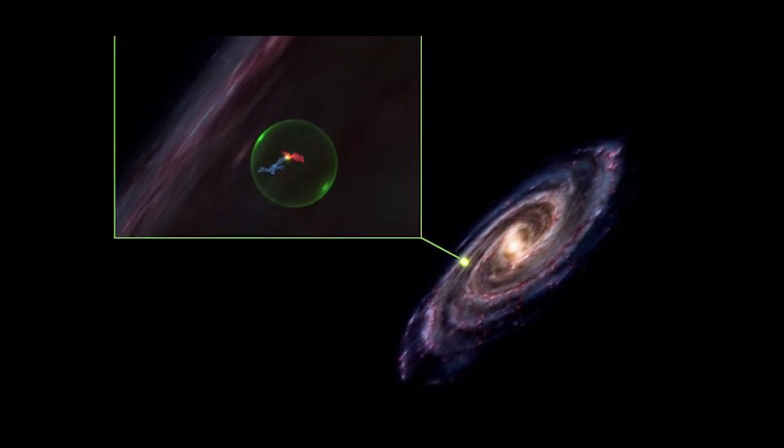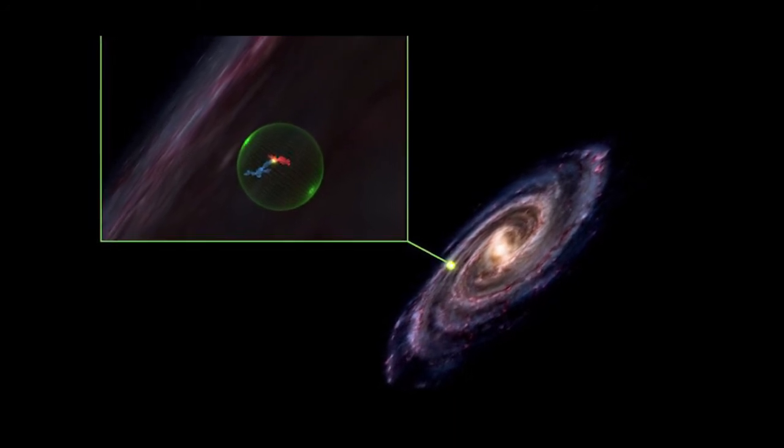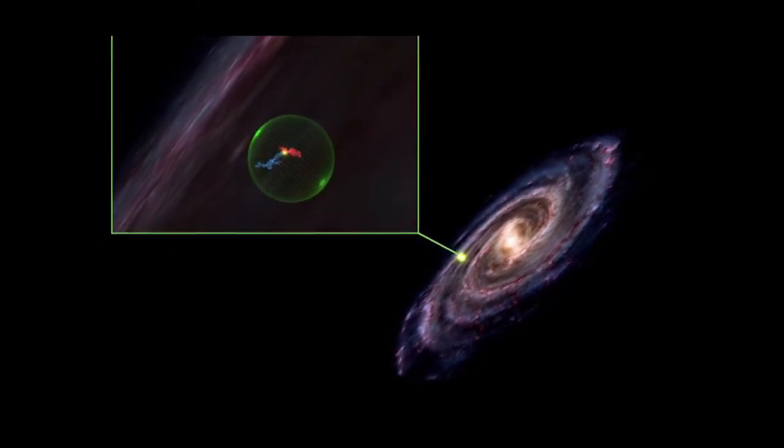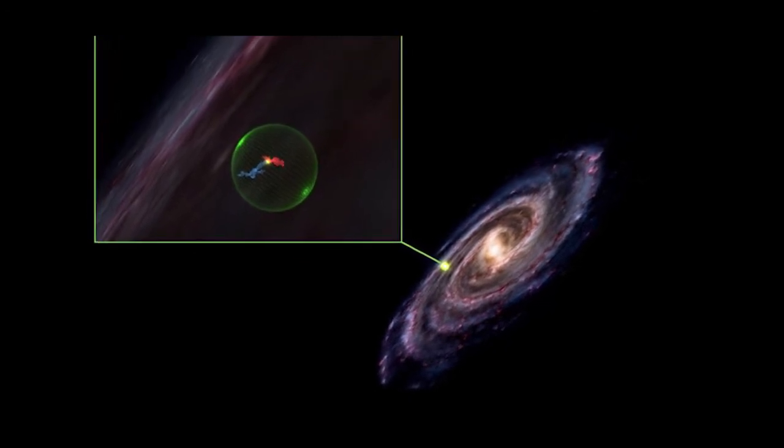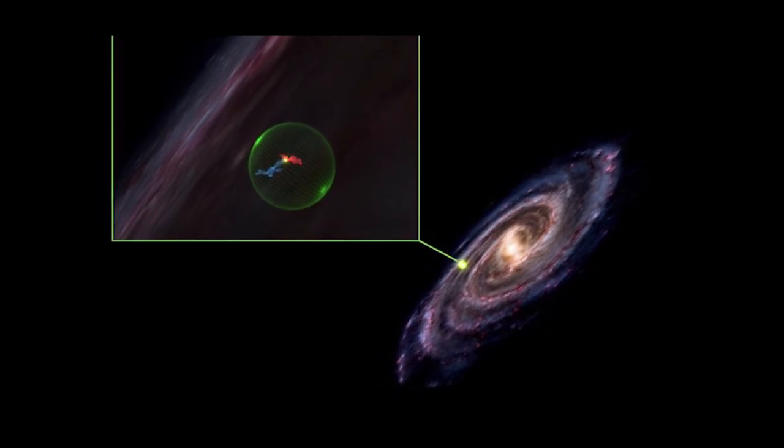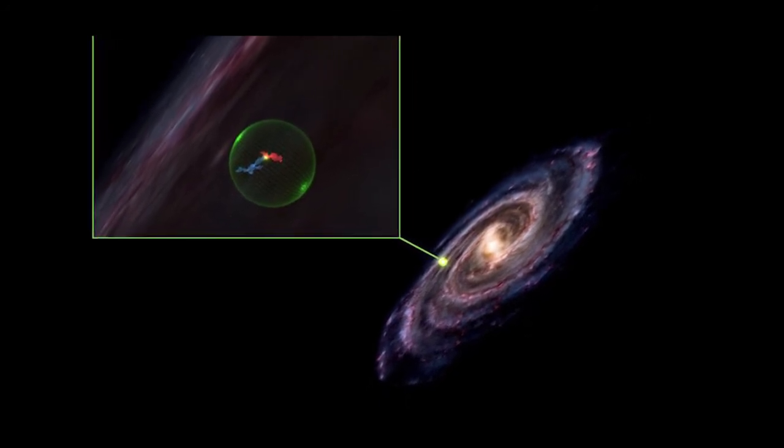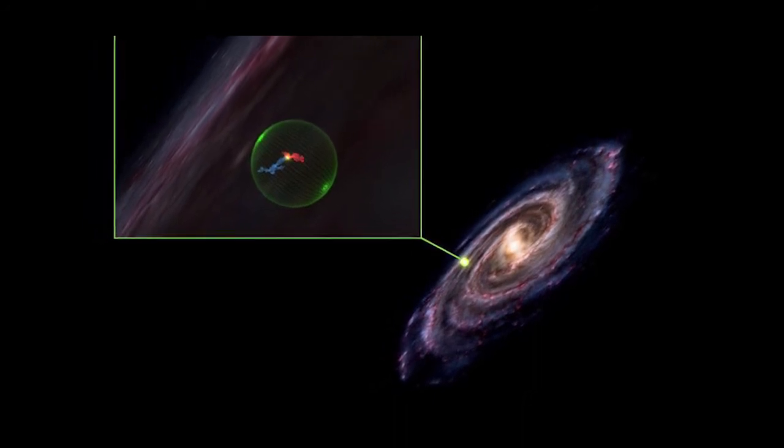Dubbed the Perseus Taurus super-shell, this newly detected chasm stretches about 500 light-years wide, according to a study published September 22 in the Astrophysical Journal Letters, and was likely created by a catastrophic supernova millions of years ago. The good news is that the ancient explosion probably accelerated star formation on the edges of the super-shell, the researchers wrote, giving this star-crossed tragedy a happy ending.